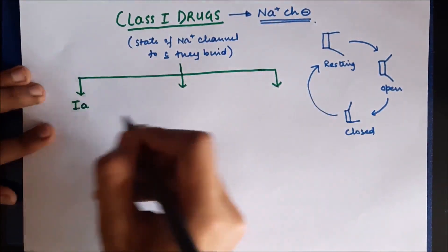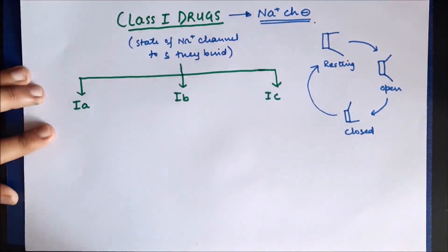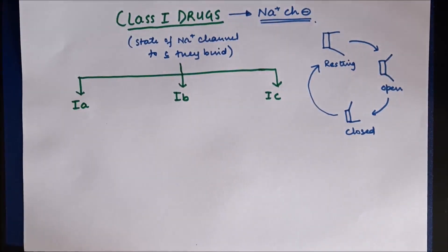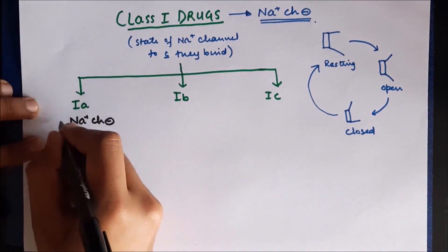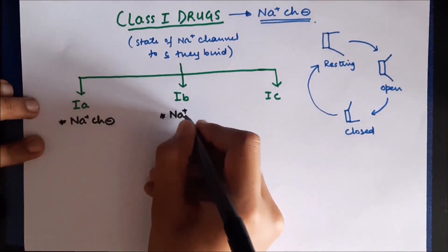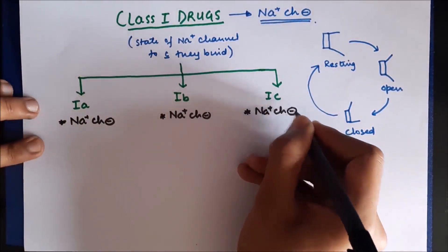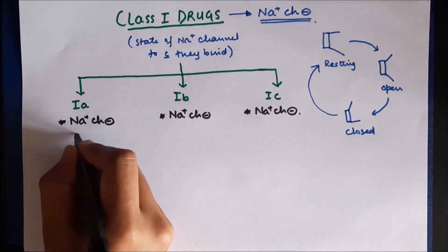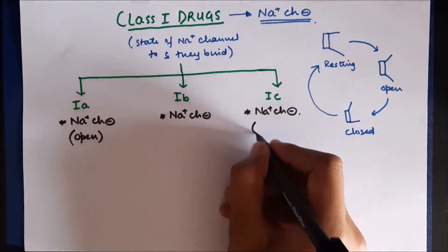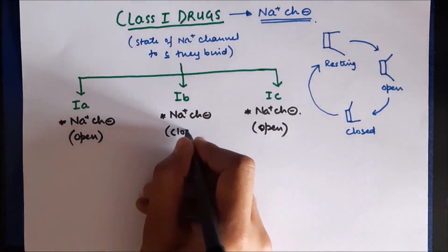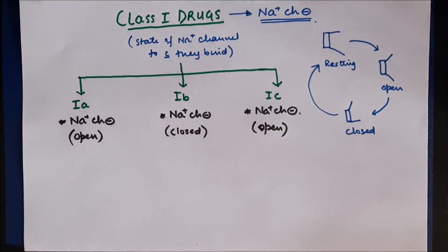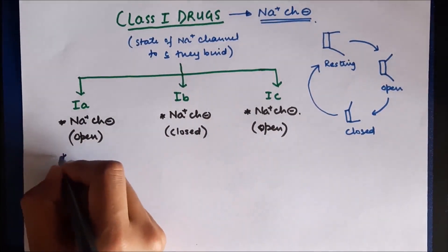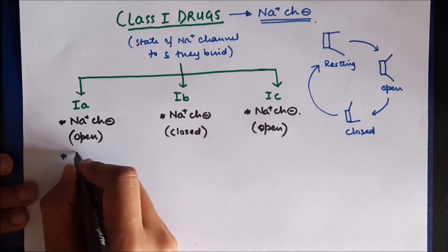The three subdivisions are Class 1a, Class 1b, and Class 1c drugs. Since all these drugs are sodium channel blockers, a common characteristic is that they all block sodium channels. Class 1a and Class 1c drugs block sodium channels in the open or active state, however Class 1b drugs block sodium channels in the closed or inactive state.